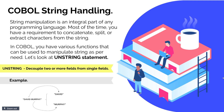The COBOL Unstring Clause is generally used to split a string from a single field into multiple fields. For example, there is a name called David Murphy with a space in between the first name and last name. The unstring clause will split this name into first name and last name — two separate fields — based on the space between them.